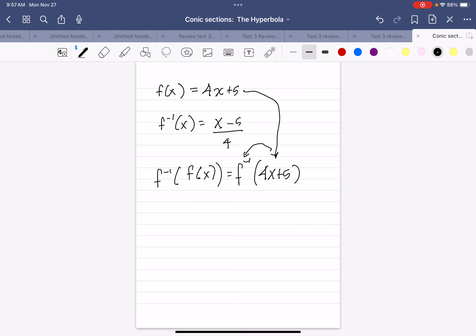That means everywhere there's an x in f inverse, I have to put 4x + 5. So look, it's (x - 5)/4, and I have to put 4x + 5 instead of that x right there.